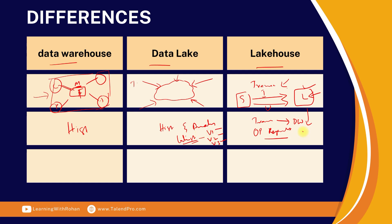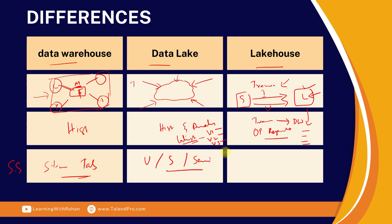You can also maintain multiple versions of data in a lakehouse. Moving on to storage structure — in a data warehouse it's mostly structured, tabular data. In data lakes it can be unstructured, structured, or semi-structured — any type of data like CSV, JSON, XML, or even video and audio files. In a lakehouse it's a combination of structured and semi-structured data, and it can also contain raw data.